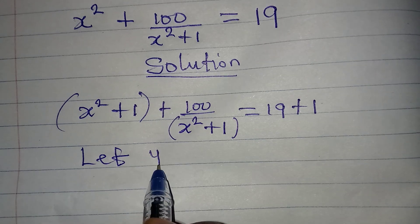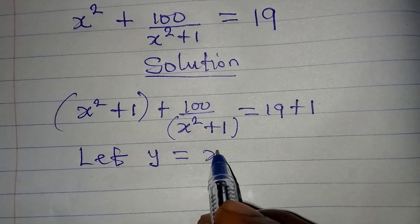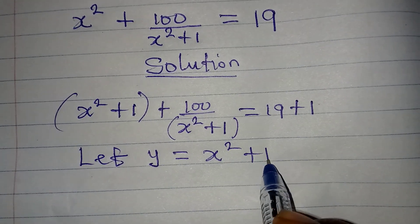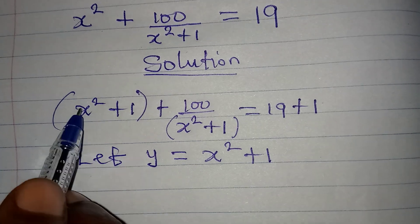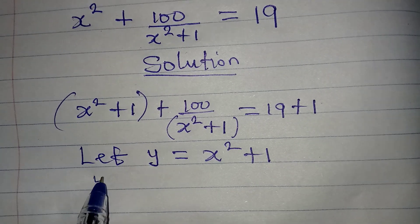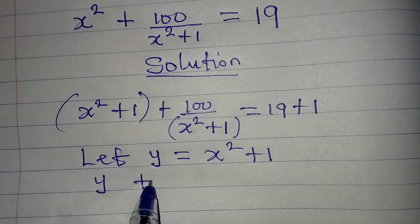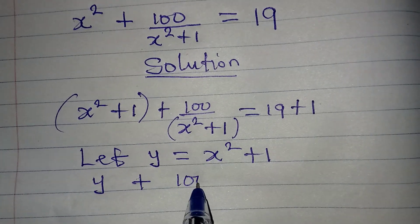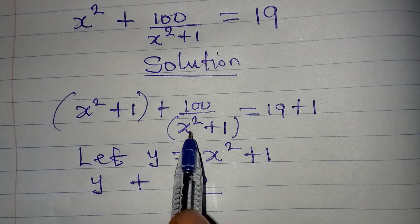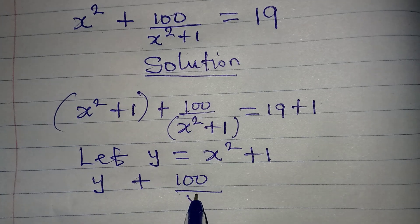So here now I'm going to have y, then plus here I have 100. We have another x squared plus 1, so here becomes y, and the whole of this is equal to 19 plus 1, and that is 20.